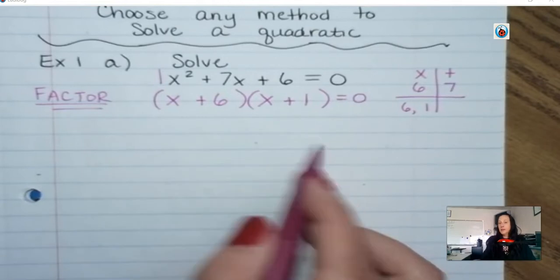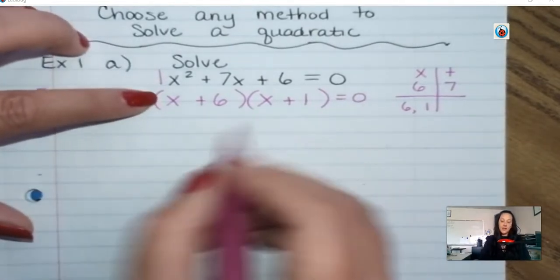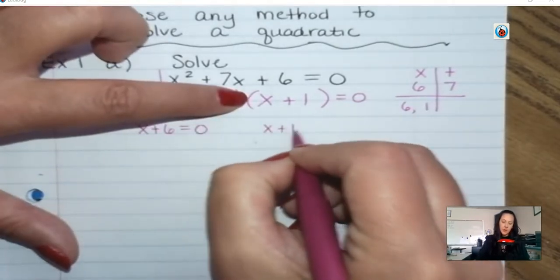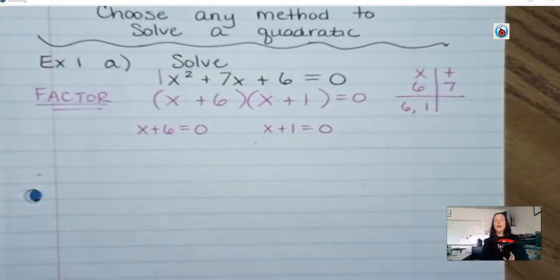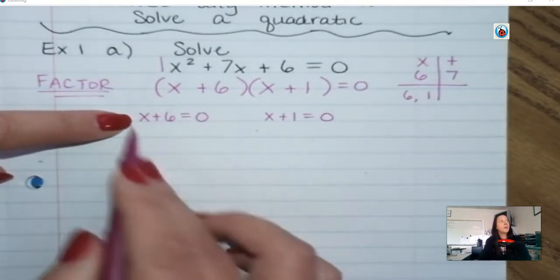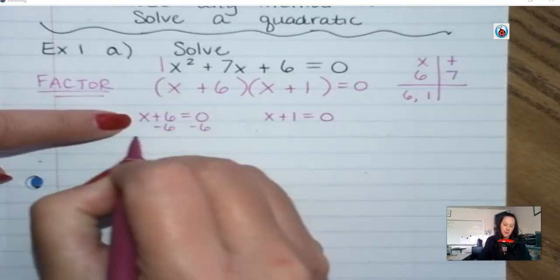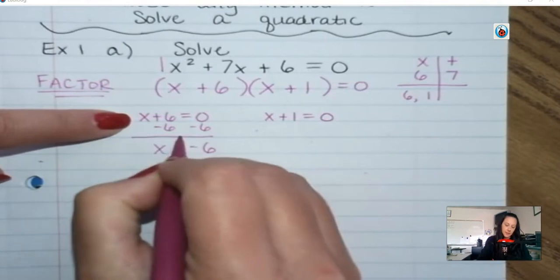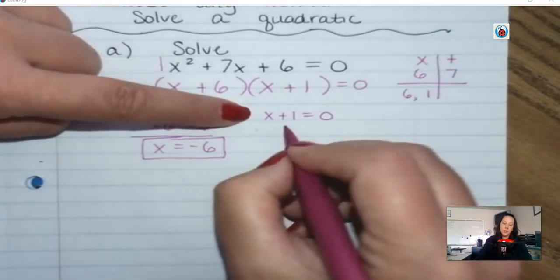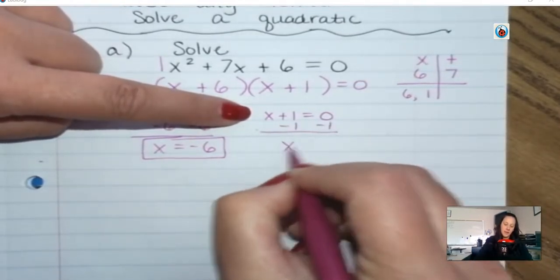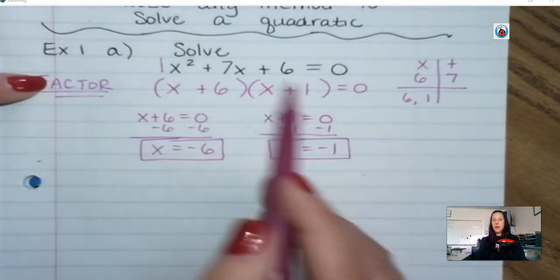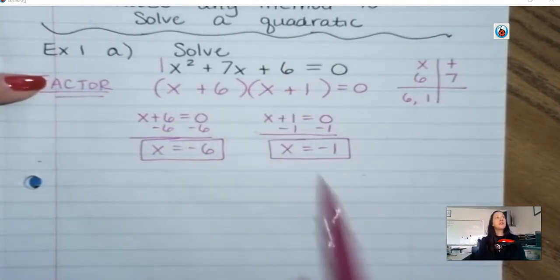Normally I can just do this step in my head, but I'm going to write it out. You take each factor and set it equal to 0. So x plus 6 equals 0 and x plus 1 equals 0. I'm going to solve this first one — subtract 6 from both sides and I get x equals negative 6. There's one of the solutions. For the other solution, I'm going to subtract 1 from both sides and I get x equals negative 1. So I would have factored because I can split it into two factors and solve them really fast.